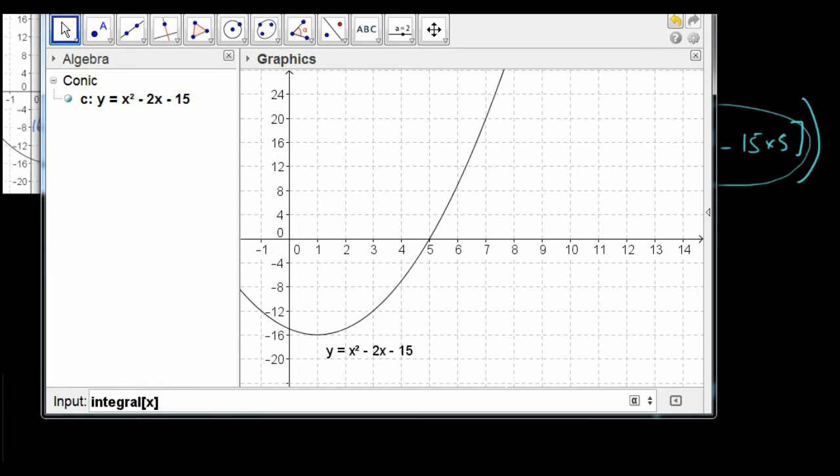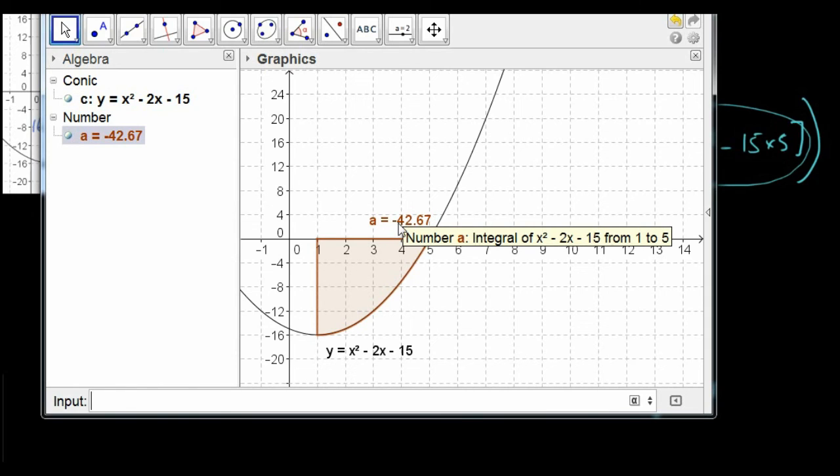So integral of x² - 2x - 15, now you are going to put comma 1 comma 5. This means that we want to find the definite integral from 1 to 5 of this equation. So it's told us that the area is 42.67.